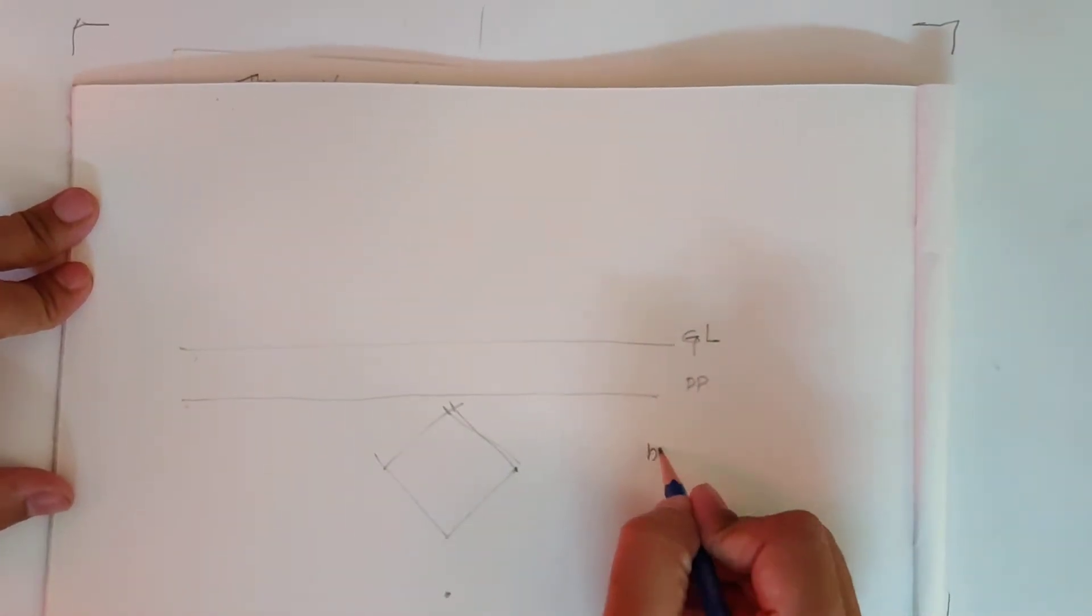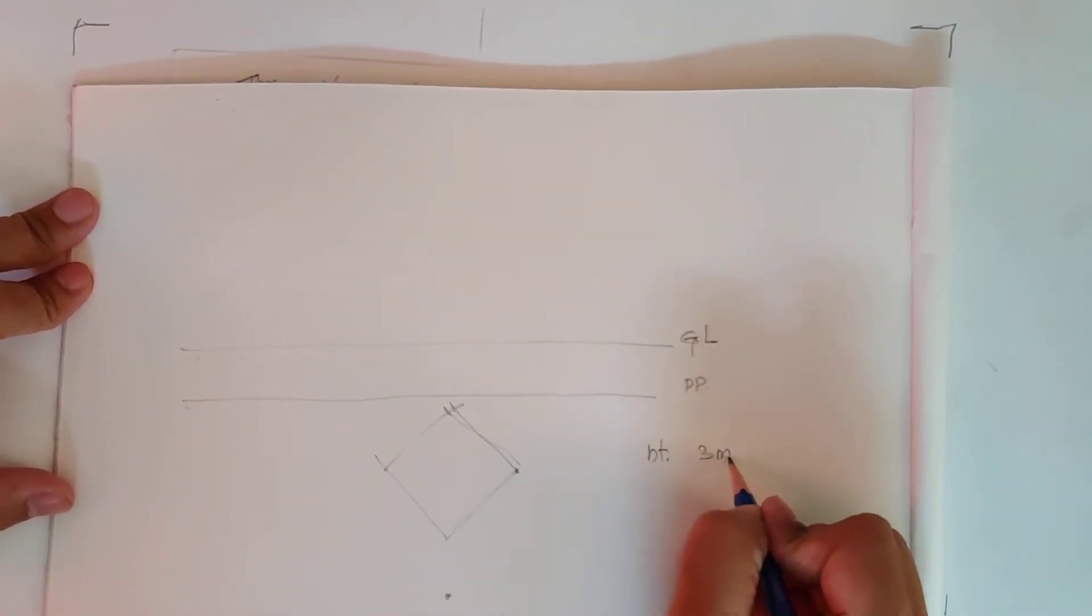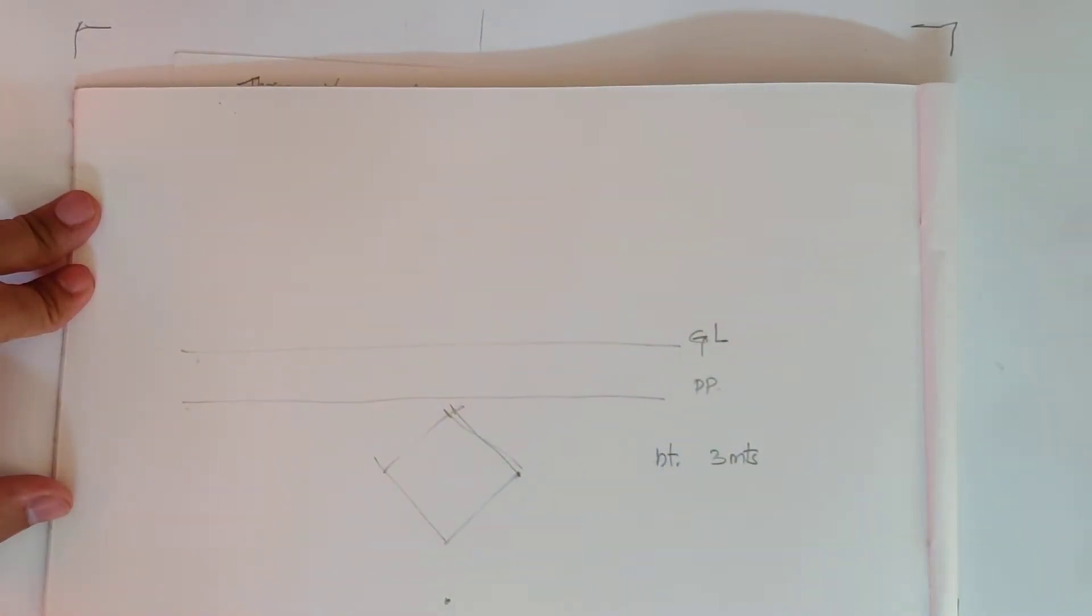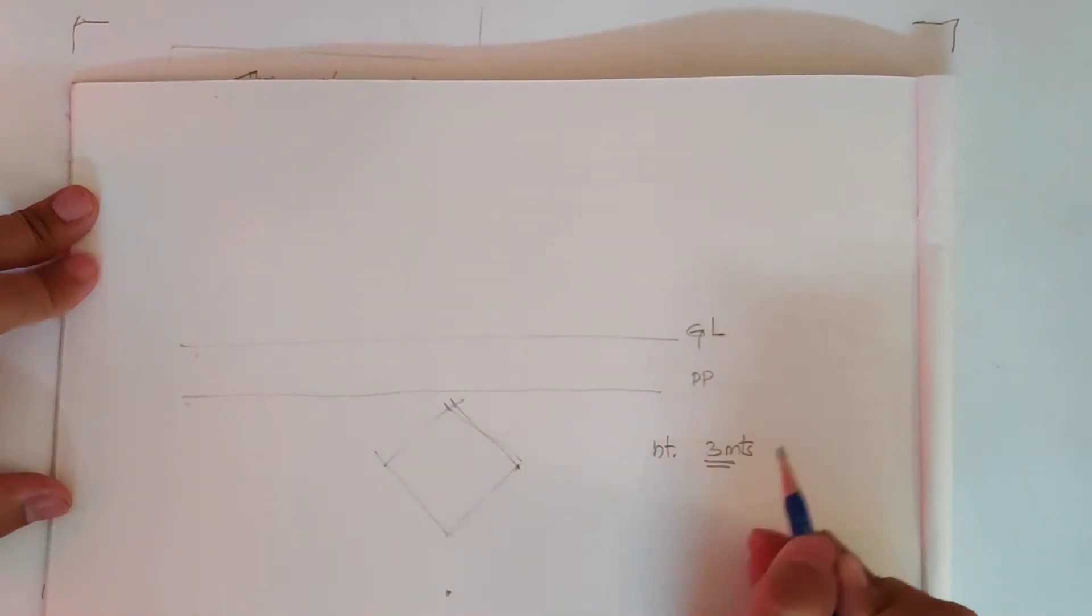Here I am taking height of object as three meters and I would be viewing this object above this three meters. So I would be making a bird's eye view.